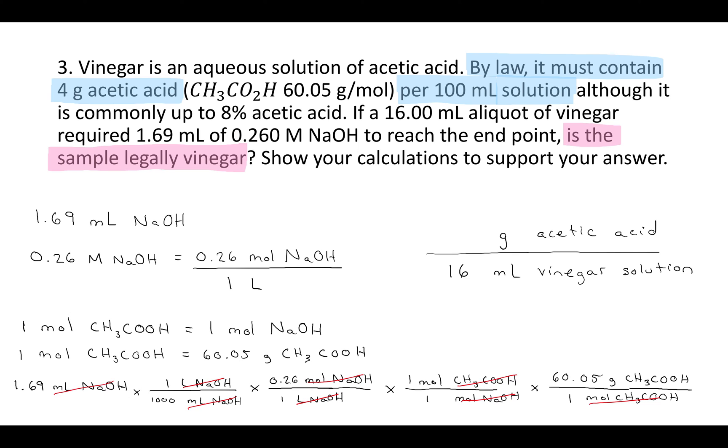And I'll be left with the grams of acetic acid that I want. Now if you plug all this into a calculator, it would be 1.69 divided by 1,000, enter, times 0.26, enter, times 60.05, enter. You should get 0.026 grams of acetic acid.